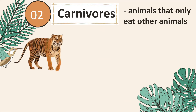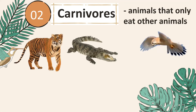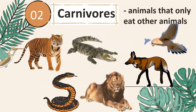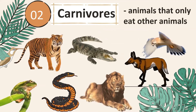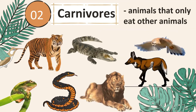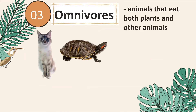Examples of carnivores are tigers, crocodiles, falcons, foxes, lions, snakes, and frogs. We also have omnivores — omnivores are animals that eat both plants and other animals. Omnivores include cats, turtles, chickens, monkeys, dogs, rats, and humans.